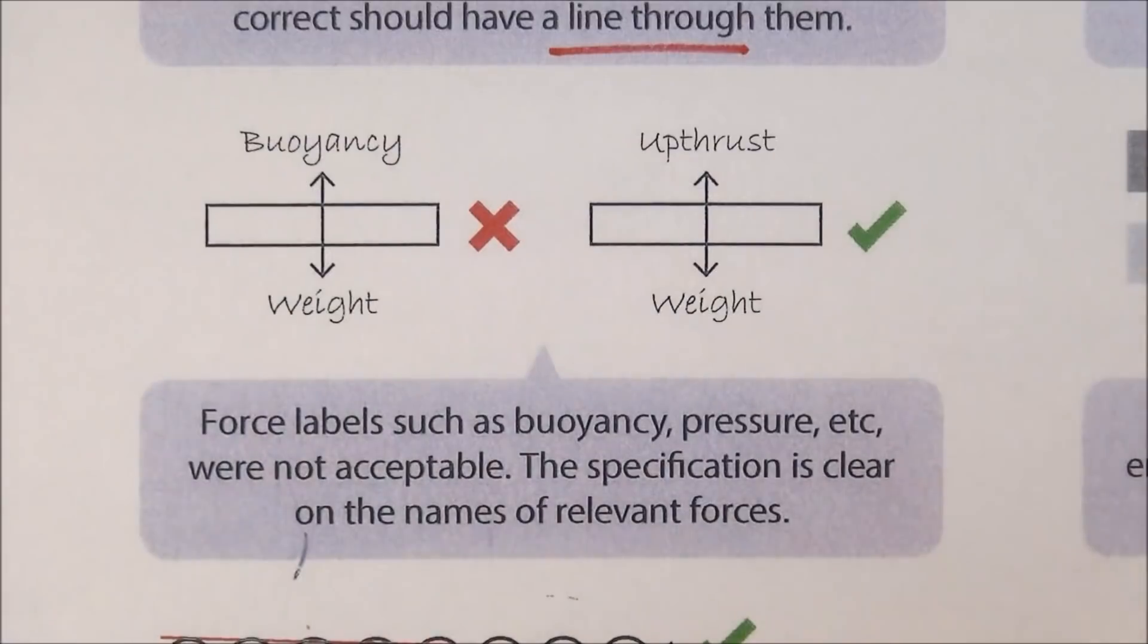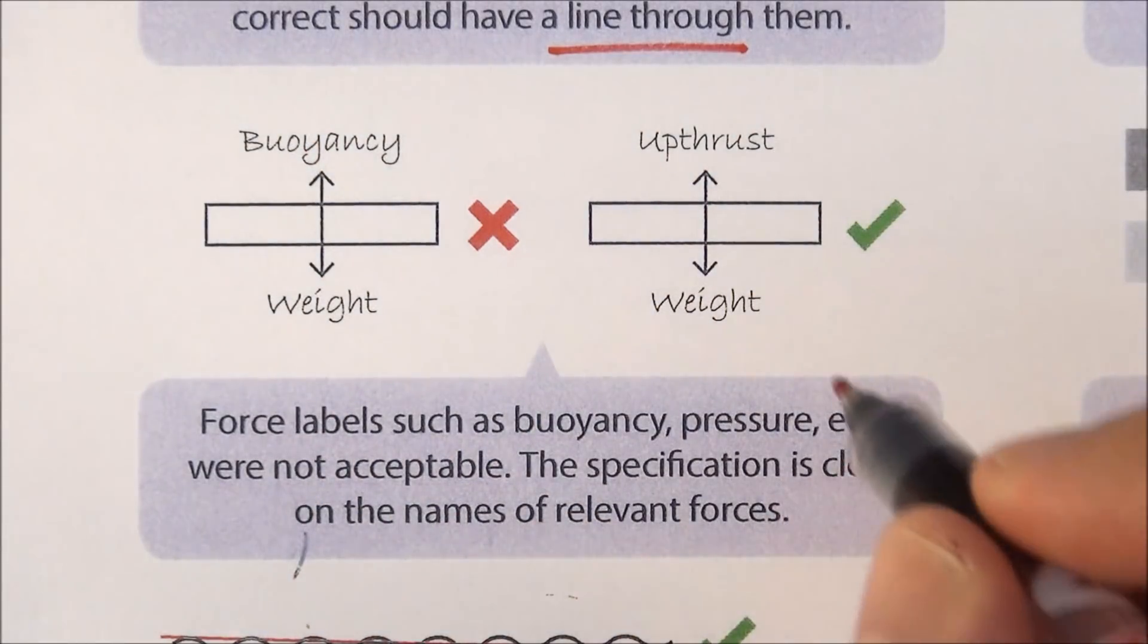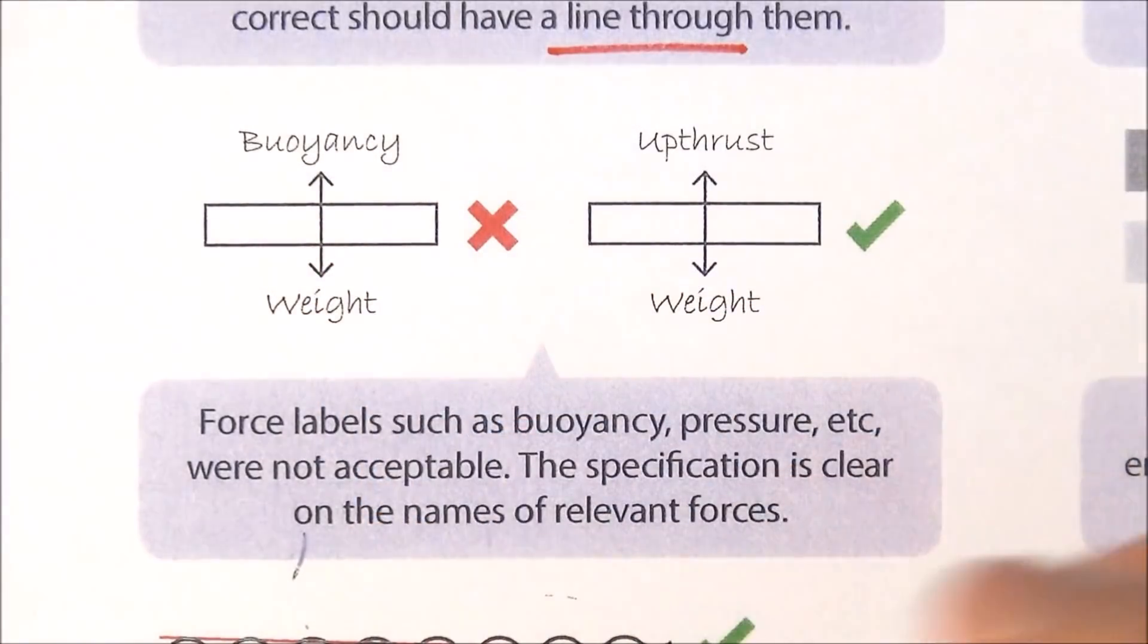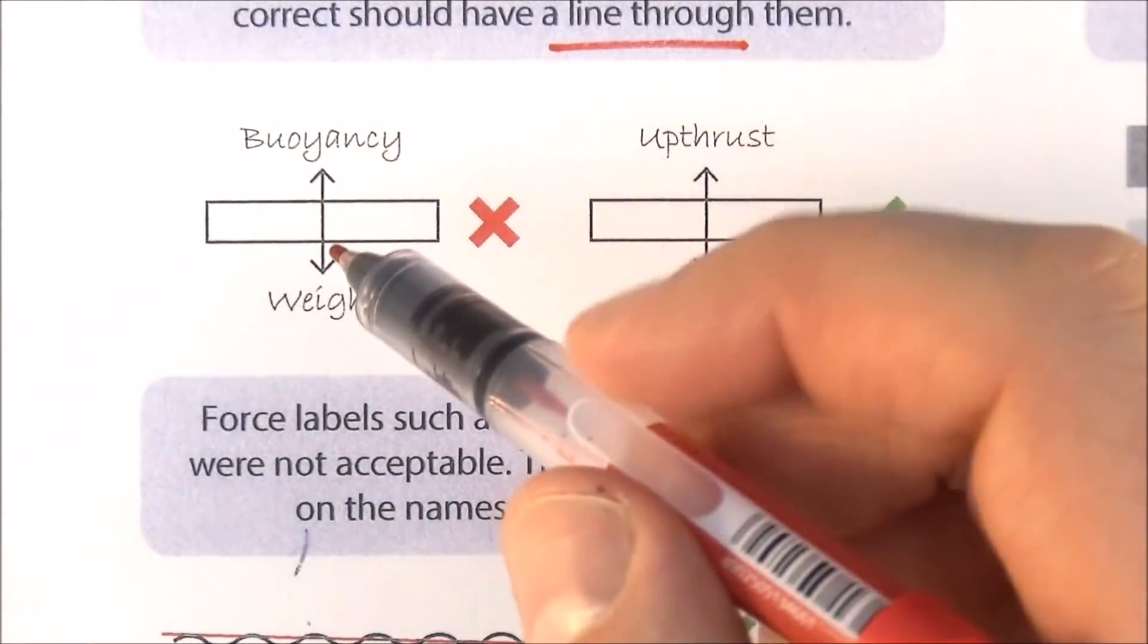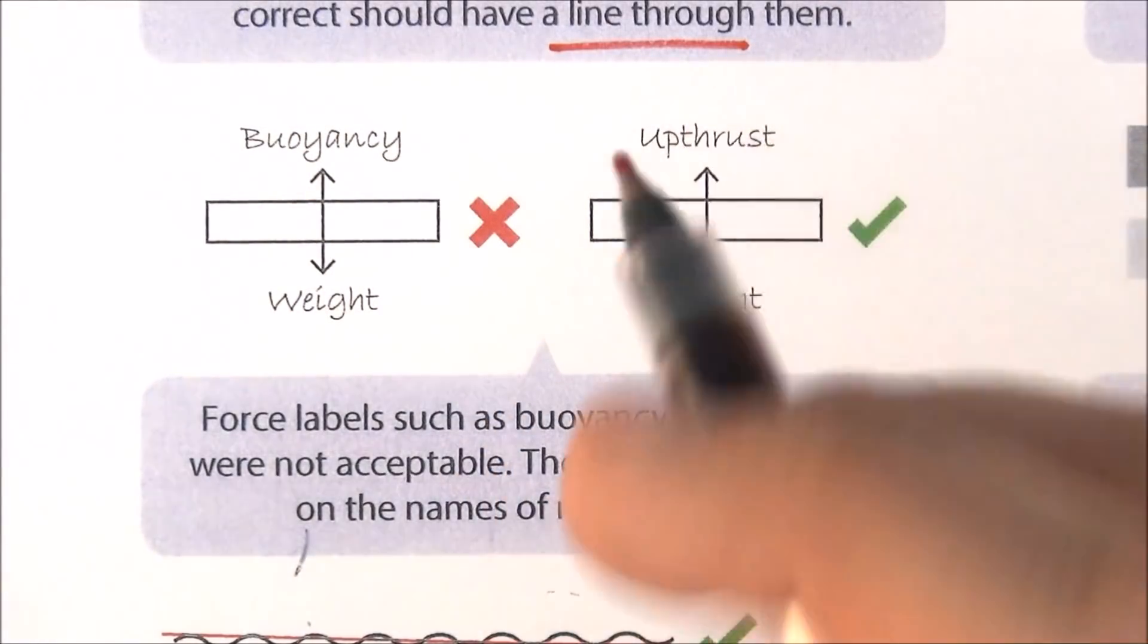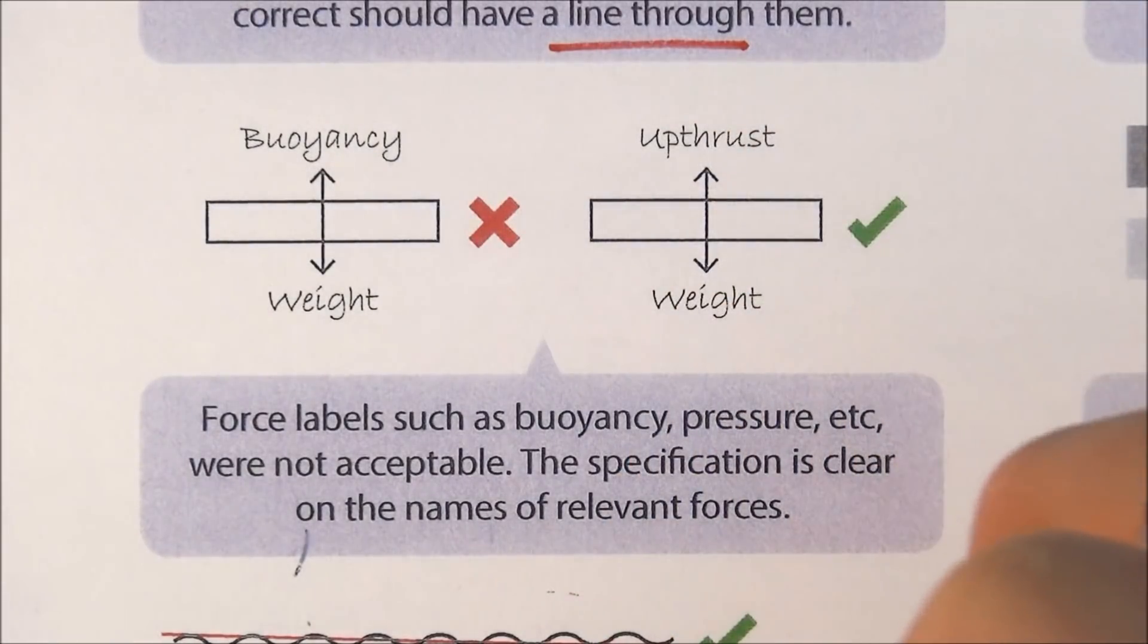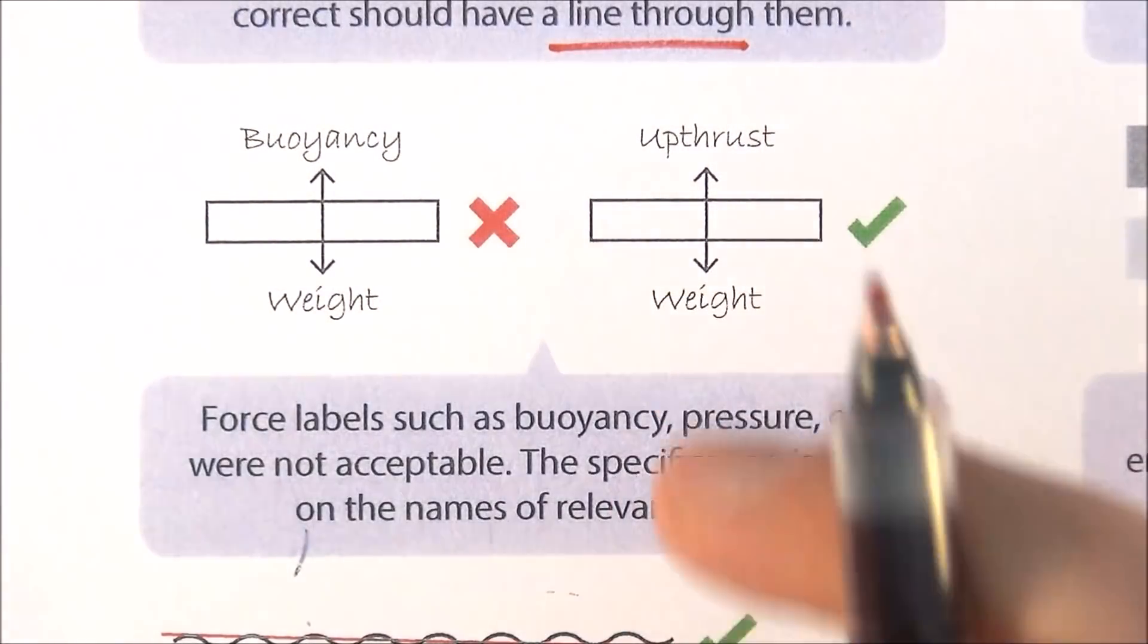Number two: make sure that you get your names of forces correct. We use things like upthrust, we don't use the term buoyancy. We use the term weight, not gravity. Never put gravity as a downwards force - weight is the thing that we need to think about. Simple marks - maybe only one mark, but it's these little marks here and there on the easy bits of recall that you need to get completely right. Make sure that you look at your list of forces and label your free body diagrams appropriately.